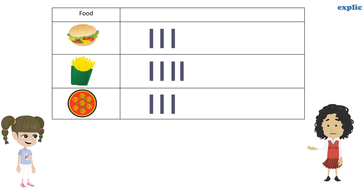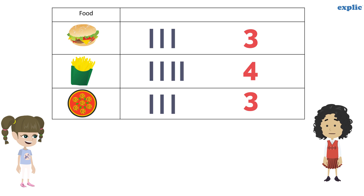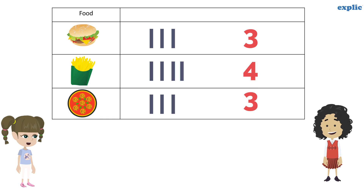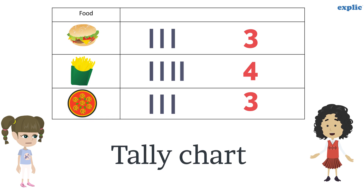Now you can count the number of lines and easily find out the number of burgers, french fries, and pizzas required for the picnic. Yes, this is so easy and quick. This method is called a tally chart and these marks are called tally marks.